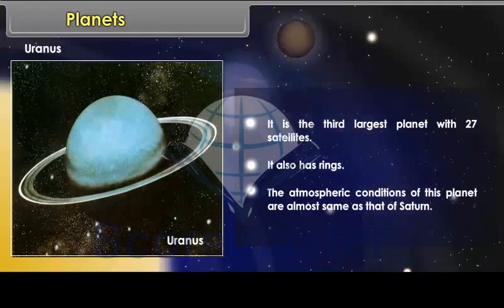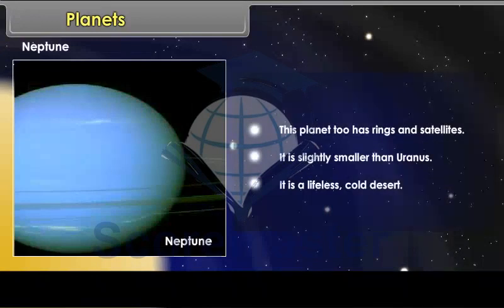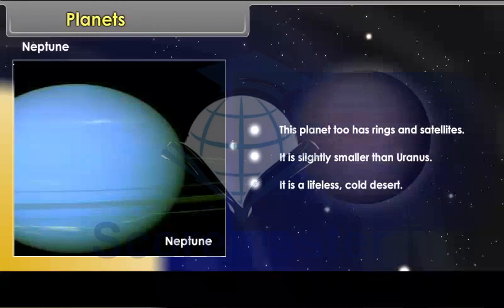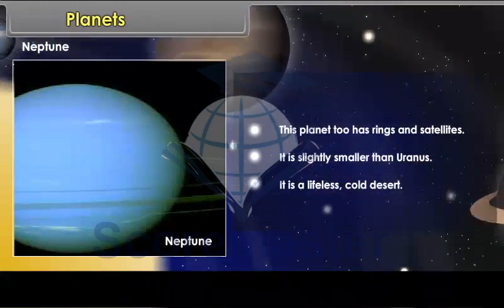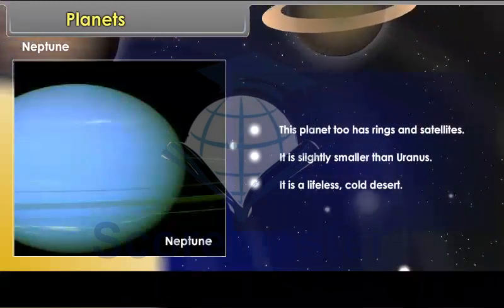Neptune. This planet too has rings and satellites. It is slightly smaller than Uranus. It is a lifeless, cold desert.